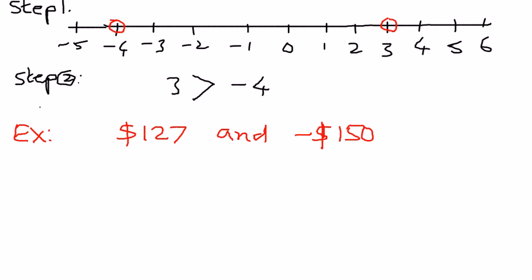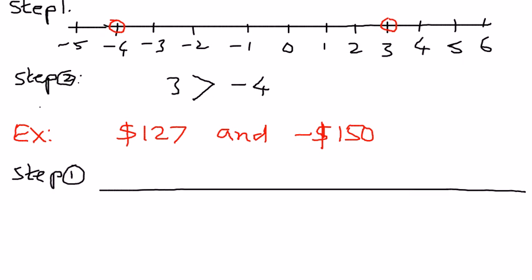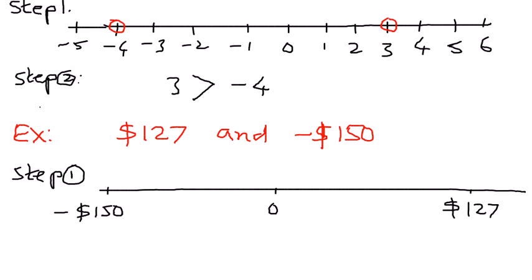So we follow the same steps. Step number 1: we'll draw the number line. We call this the origin 0. For the positive number, since we have positive $127, I will put $127 to the right side of the origin. And to the left side of the origin, I will identify negative $150. To the right side of the origin are positive numbers; to the left side are negative numbers.